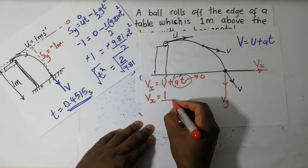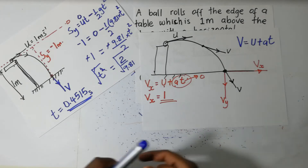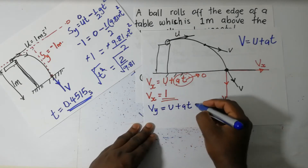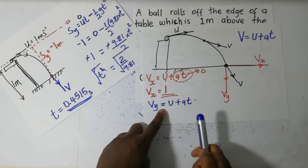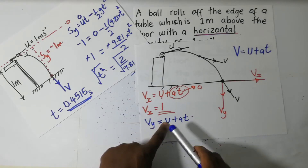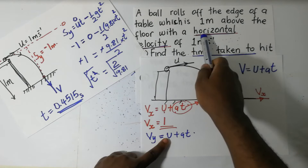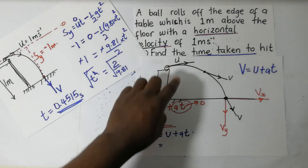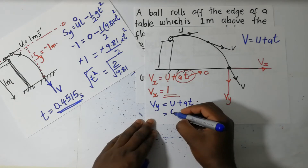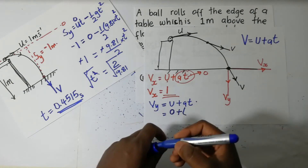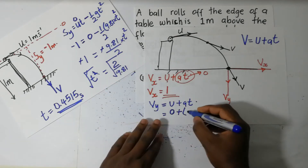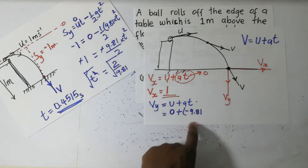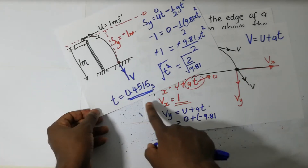Now let's find vy. The component of velocity in the y direction is given by vy equals u plus a·t. The initial velocity in the y direction is zero because the ball has only a horizontal velocity — it is not inclined at any angle. So vy equals zero plus negative 9.81 times t, where t is 0.4515 seconds from part one.